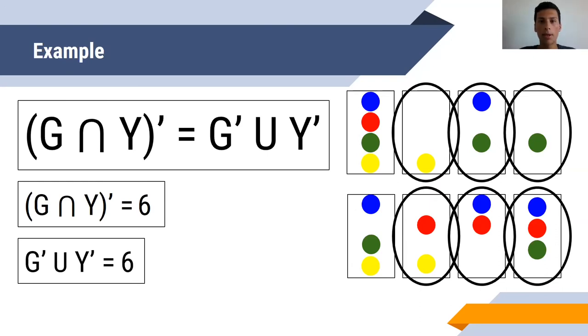Since the answers are the same, this proves that both phrases of De Morgan's law get the same value, meaning they're equal.